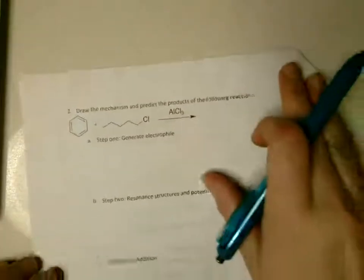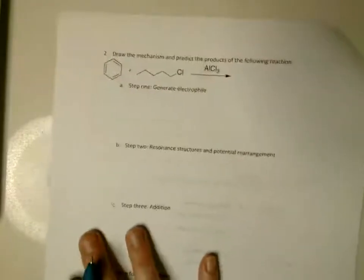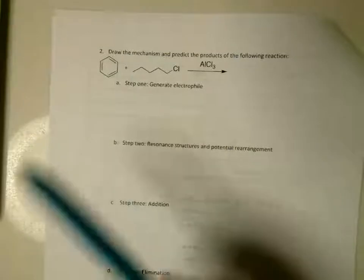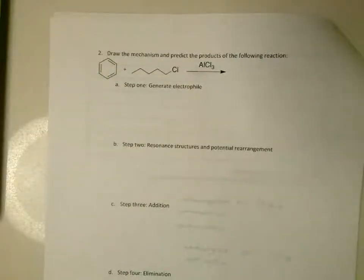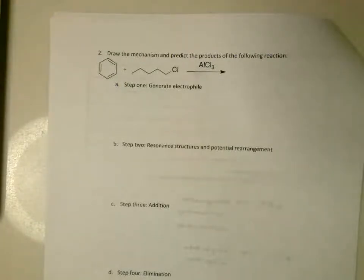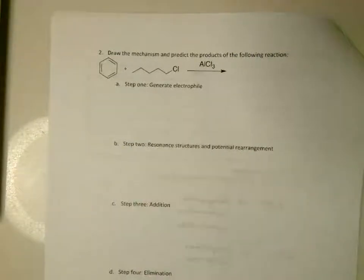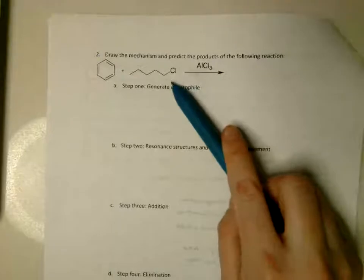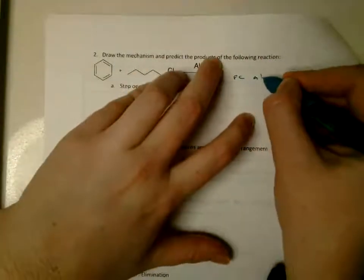Question two: draw the mechanism and predict the products of the following reaction. When I see a benzene ring, I know it can only go through a few reactions — nitration, halogenation, sulfonation, or Friedel-Crafts. In this case, because there's a Lewis acid and an alkyl halide, I know that's going to be a Friedel-Crafts alkylation specifically.